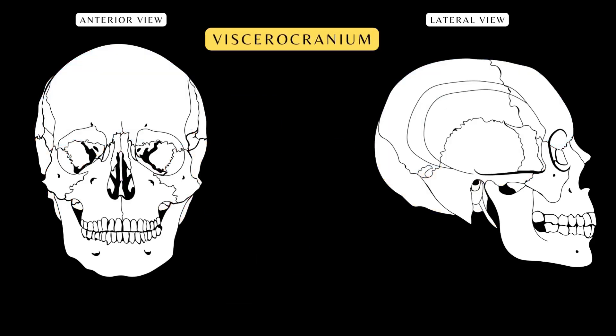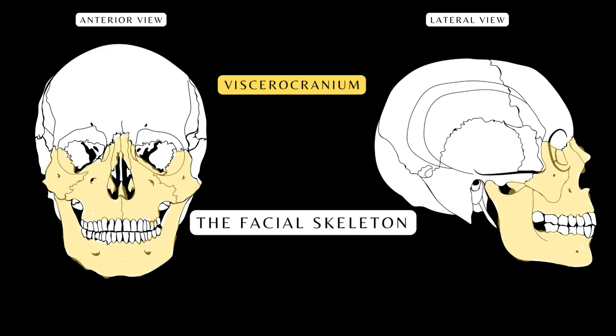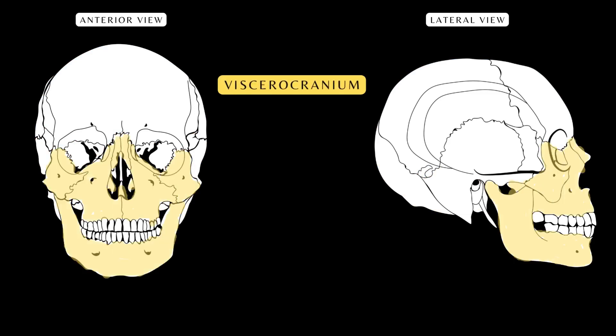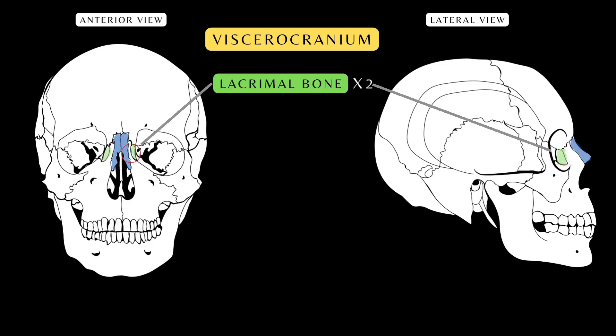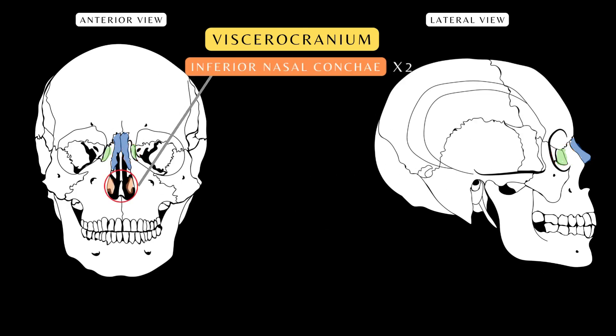Let's look at the bones that make up the viscerocranium — the facial skeleton. First is the nasal bone, a small, flat, paired bone located medially to the frontal processes of the maxillae. They articulate at the internasal suture to form the nose bridge. The lacrimal bone is a small paired bone located in the medial wall of the orbit. The inferior nasal concha, also called the turbinate or curled bone, is one of the three paired nasal conchae in the nose — the other two, the superior and middle nasal conchae, belong to the ethmoid bone.